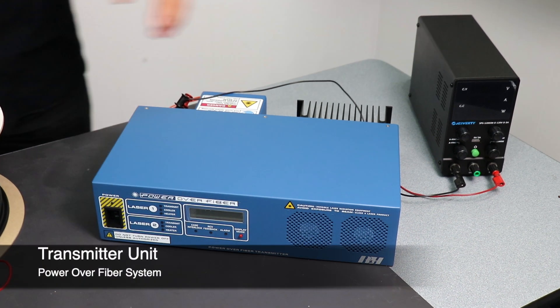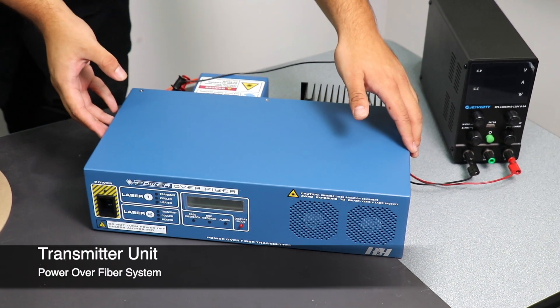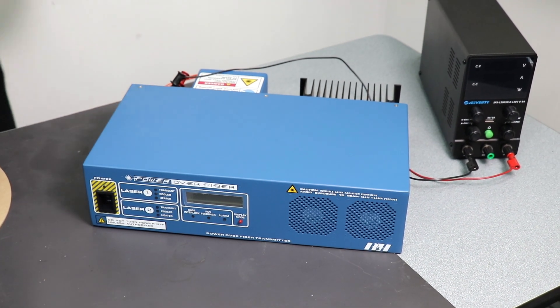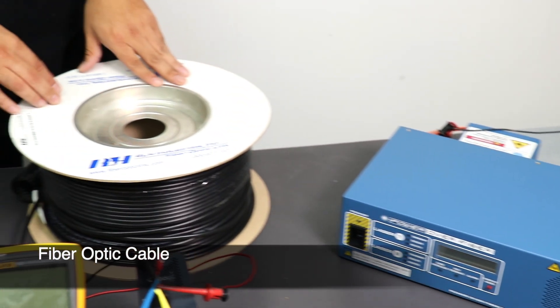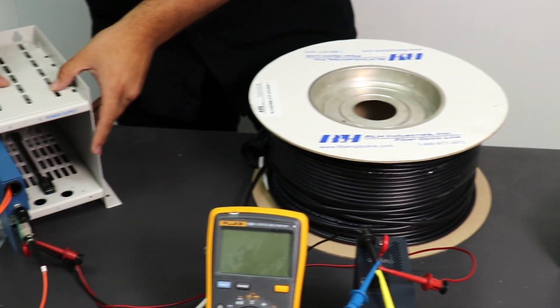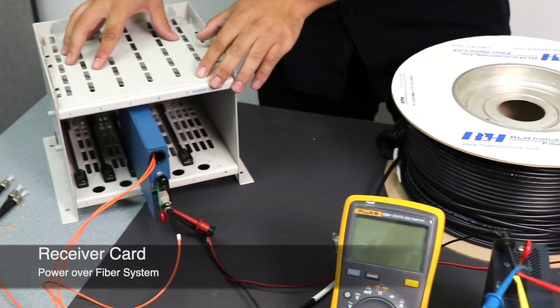So as you can see over here, you have your transmitting unit over here, and three fibers are connected to this 500 feet cable and connected to our own receiver card over here, placed in the card housing.